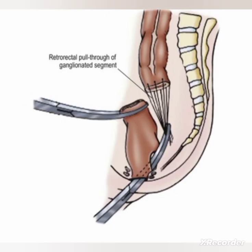In the Duhamel procedure, the ganglionated bowel is delivered through an incision in the posterior aspect of the native aganglionic rectum and sewn to the anus. The septum between the ganglionated pull-through colon and the aganglionic native rectum is then divided using a stapler.